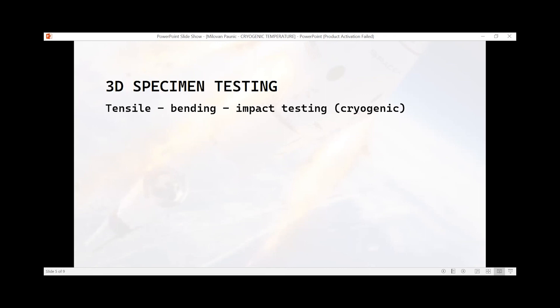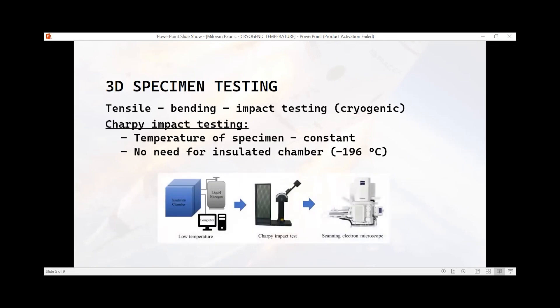Now we will talk about tensile, bending, and impact testing at cryogenic environment with basic equipment, as simple as possible. Charpy impact testing is fast testing where temperature of specimen stays pretty much constant, because within five to ten seconds specimen can be put out from container which contains liquid nitrogen and put on Charpy testing.